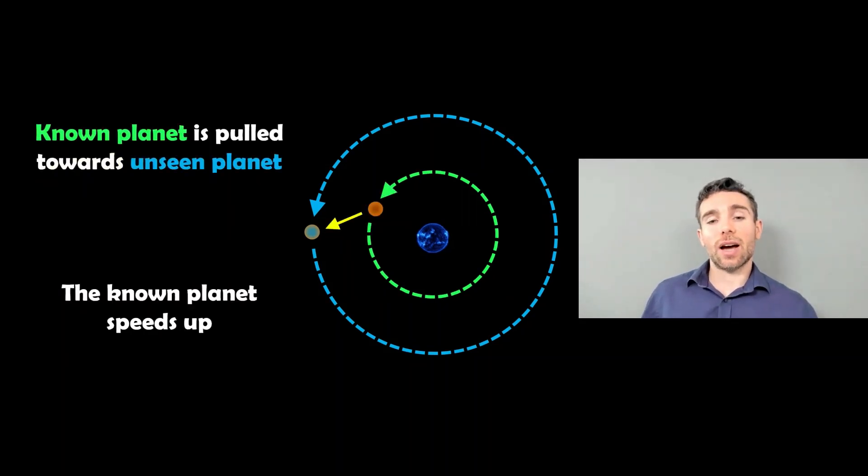In this configuration here, you've got the inner planet which we know about orbiting faster than the outer one, so it's going to overtake. As it does so, it's being pulled towards the unseen planet, which will slightly speed up the orbital velocity of the known planet.